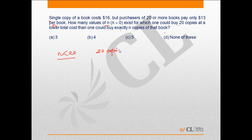When you buy 20 copies, you pay $13 times 20. Right. And let's say when you buy n copies, you end up paying $16 times n. Now, as per this